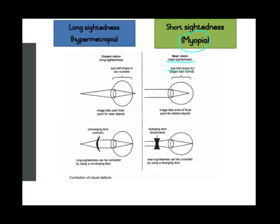One problem can be that the eyeball is longer than normal. In a person with short-sightedness, the cornea is too convex — meaning it is too rounded. Because the cornea is too rounded, there is going to be a problem with where the image focuses. The light rays coming through create an image in front of the retina, and not on the retina where it is supposed to be.